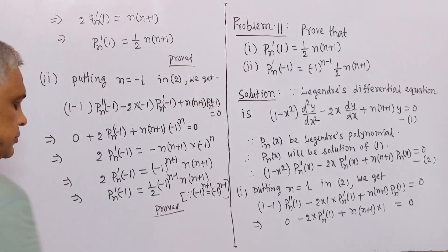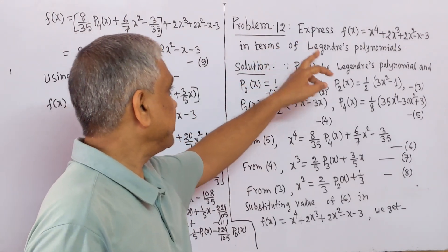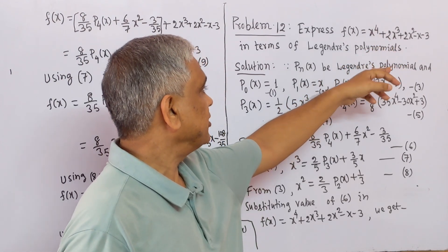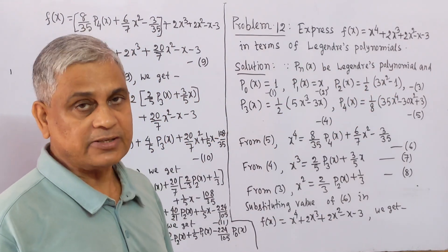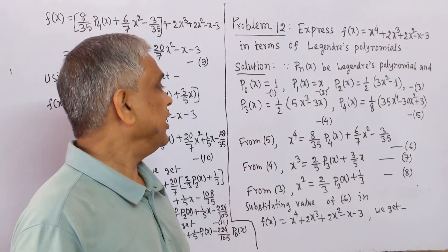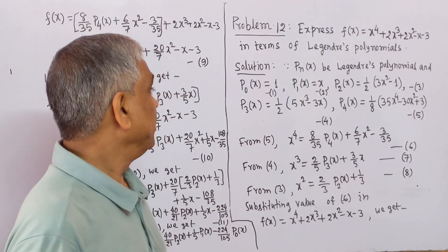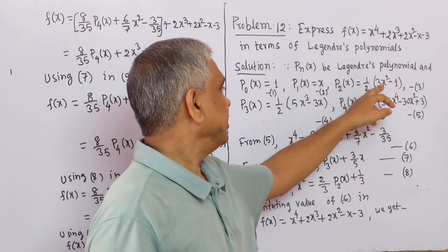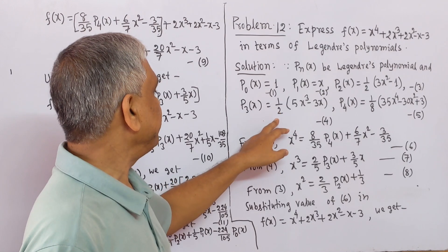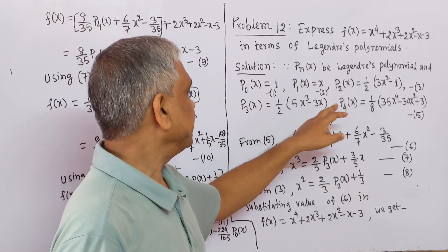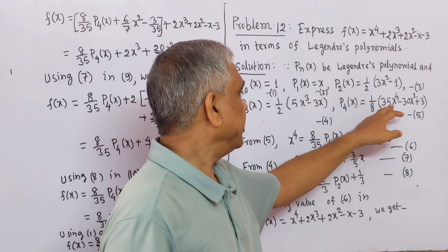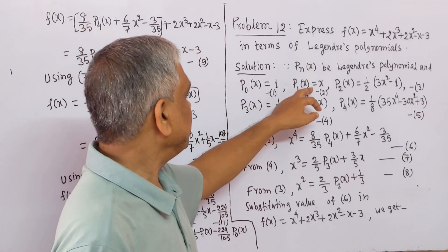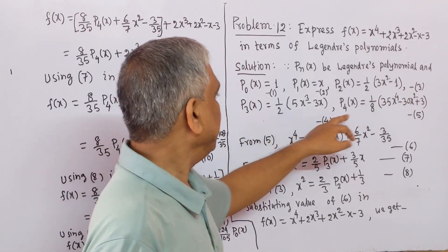Now we solve problem number 12. Express f(x) = x⁴ + 2x³ + 2x² - x - 3 in terms of Legendre polynomials. Since P_0(x) = 1, P_1(x) = x, P_2(x) = (1/2)(3x²-1), P_3(x) = (1/2)(5x³-3x), P_4(x) = (1/8)(35x⁴ - 30x² + 3). These are equations 1 through 5.